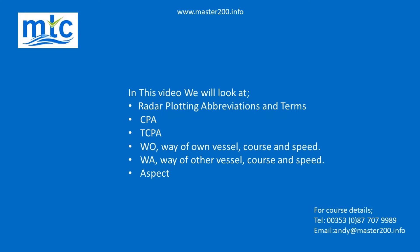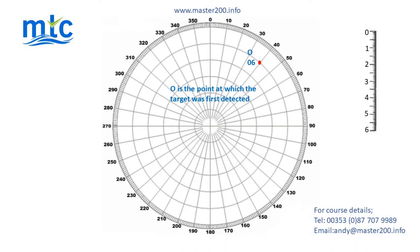O is the point at which the target was first detected and is marked O with the time — in this example, 6 minutes past the hour. The next plot is 6 minutes later and is marked with the time 12 minutes past the hour.